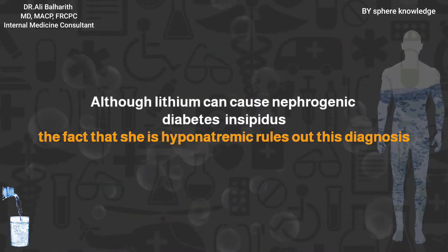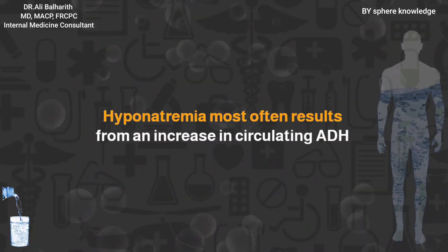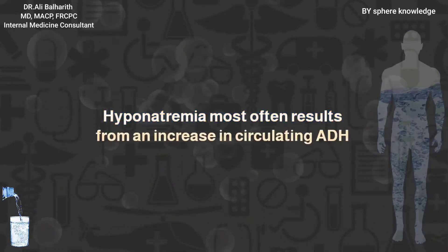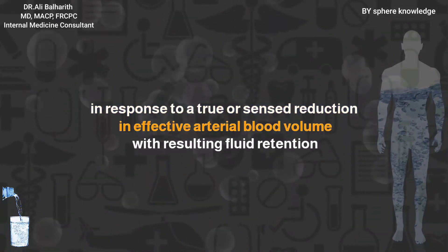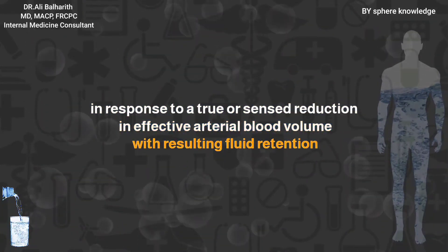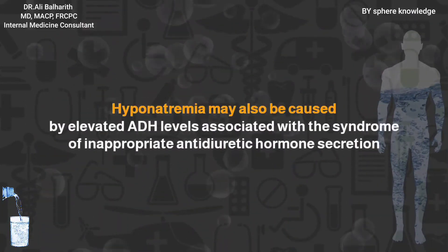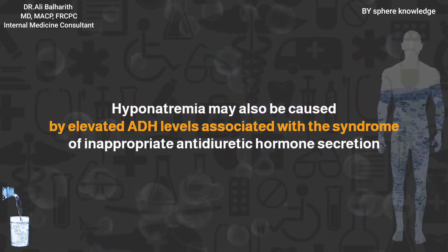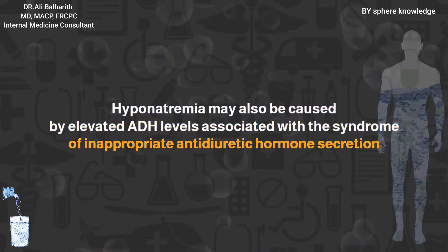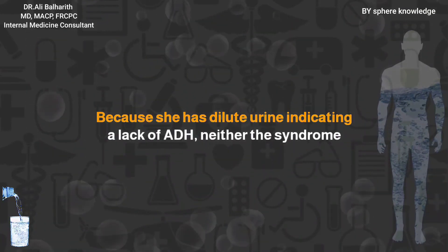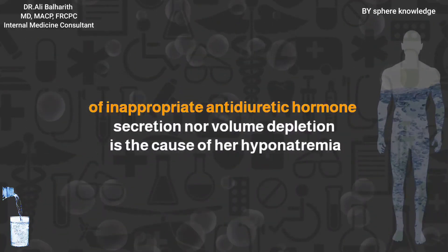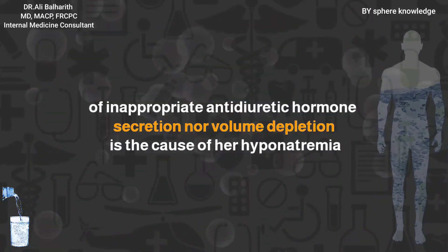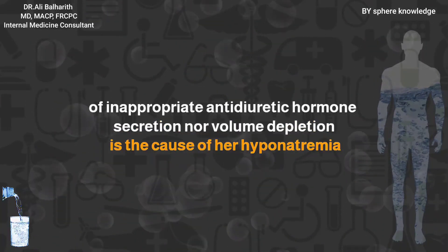Hyponatremia most often results from an increase in circulating ADH in response to a true or perceived reduction in effective arterial blood volume, with resulting fluid retention. Hyponatremia may also be caused by elevated ADH levels associated with the syndrome of inappropriate antidiuretic hormone secretion (SIADH). Because she has dilute urine, indicating a lack of ADH, neither SIADH nor volume depletion is the cause of her hyponatremia.